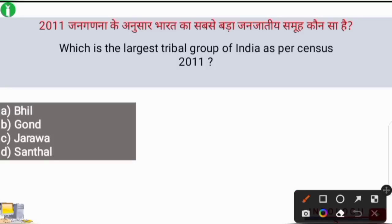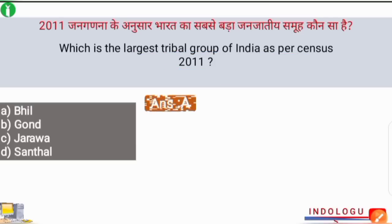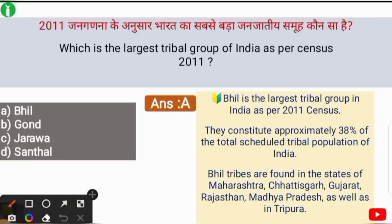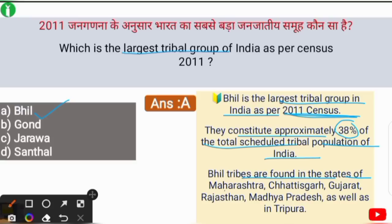Next question: which is the largest tribal group of India as per the census of 2011? The correct answer is option A — Bhil tribe. The Bhil tribe is the largest tribal group in India, constituting approximately 38% of the total scheduled tribe population. They are found in Maharashtra, Chhattisgarh, Gujarat, Rajasthan, Madhya Pradesh, and Tripura.